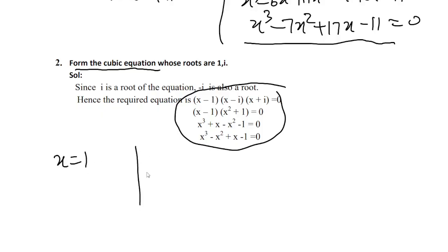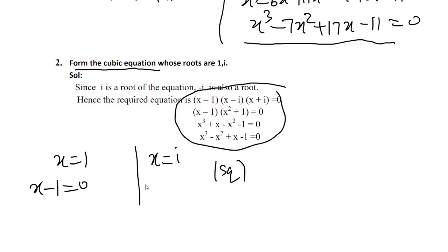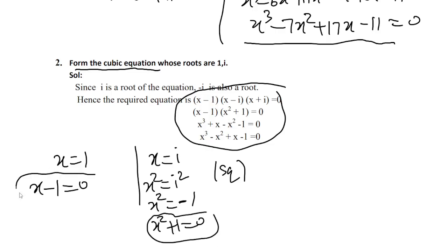x equals 1 and x equals i. So x minus 1 equals 0. Since i is also a root, we square: x² equals i², and i² equals minus 1. Then x² plus 1 equals 0. So we have (x minus 1)(x² plus 1) equals 0.